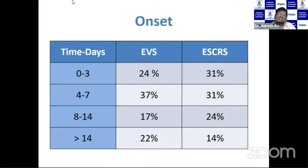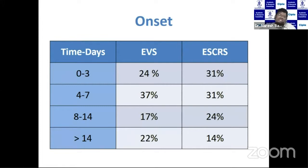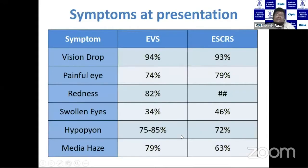Comparing the EVS study from the 1990s with the ESELS study from the 2010s, there is not much difference in the time of onset: 0–3 days accounts for 25–31%, 4–7 days for 37%, and 8–14 days for about 22% of cases. There is no change in the time of onset between both studies.